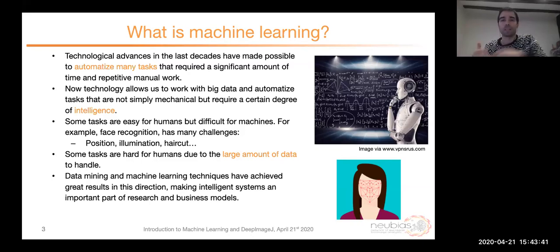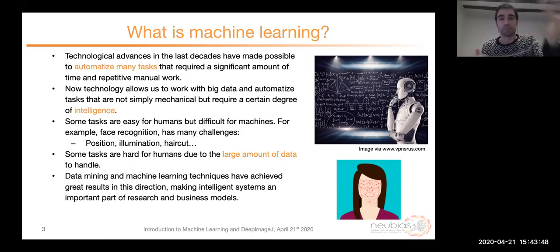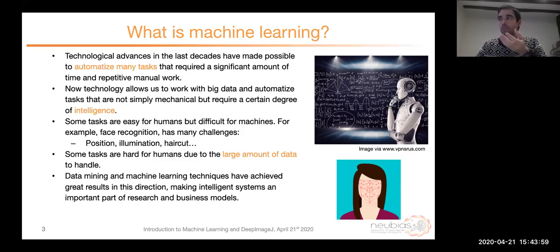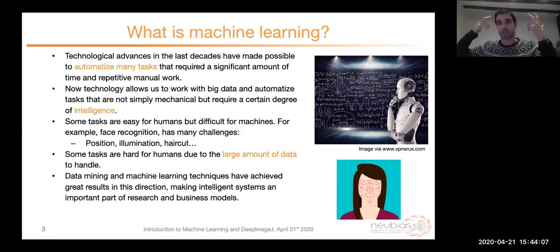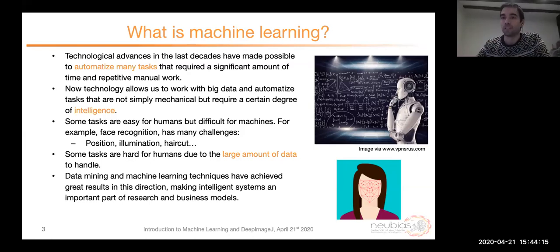What kind of tasks are we talking about? There are some tasks that are easy for humans but difficult for machines — for example, face recognition. We wake up every day and immediately recognize the people surrounding us: our family, friends, acquaintances, neighbors, especially now that we live confined with very few people. But if you think about it, it's a very difficult problem because the face varies a lot based on position, illumination, haircut, hat, glasses, etc. Because of that, for many years it's been a very difficult problem for machines.